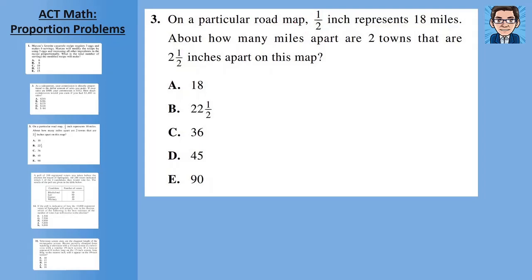All right, on a particular roadmap, one half inch represents 18 miles. About how many miles apart are two towns that are two and a half inches apart? So let's set up the proportion as we have a measurement on the map and then we have an actual. So now we've got fractions in here. So we're going to have fractions within fractions, but we do it the same exact way.